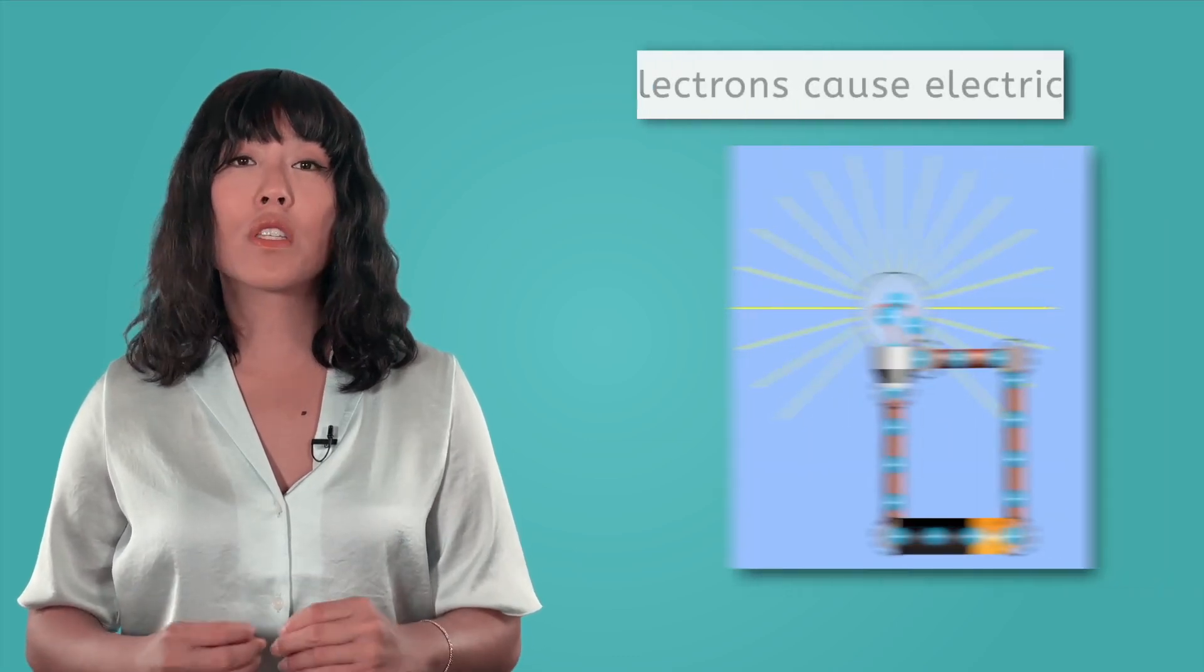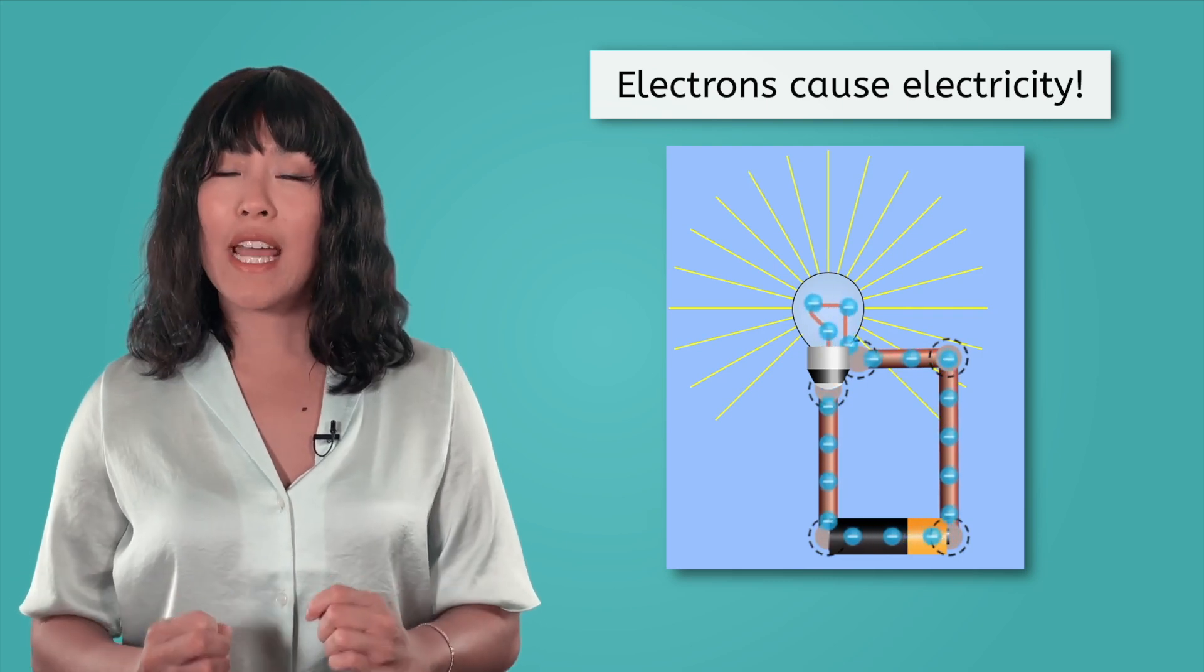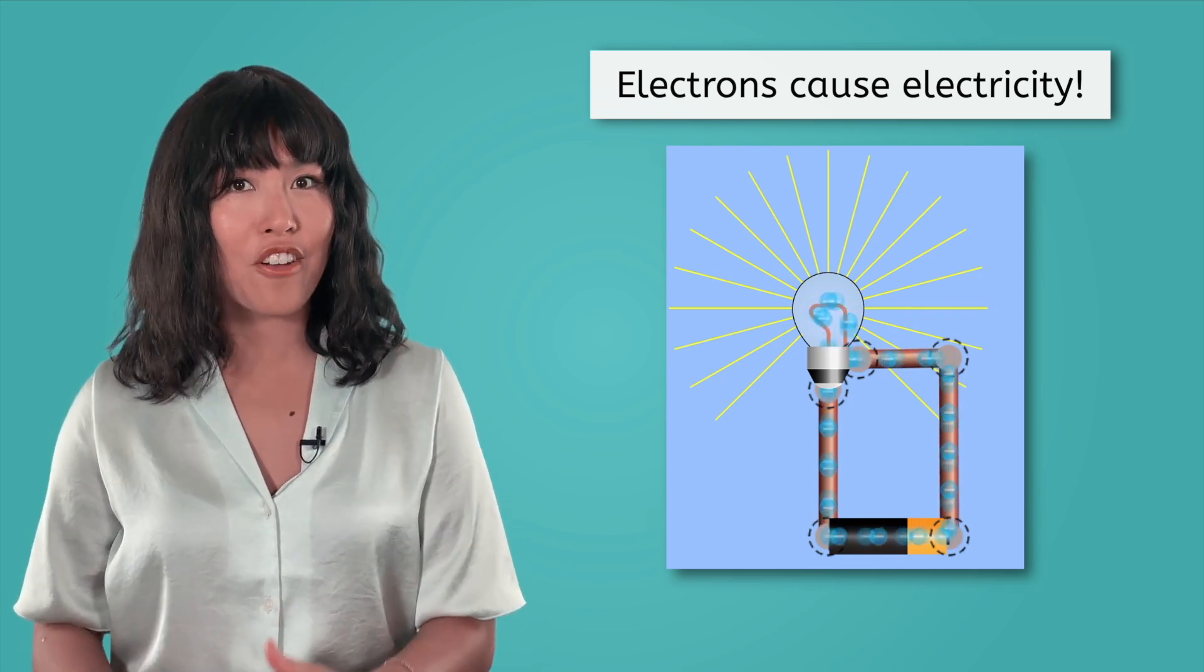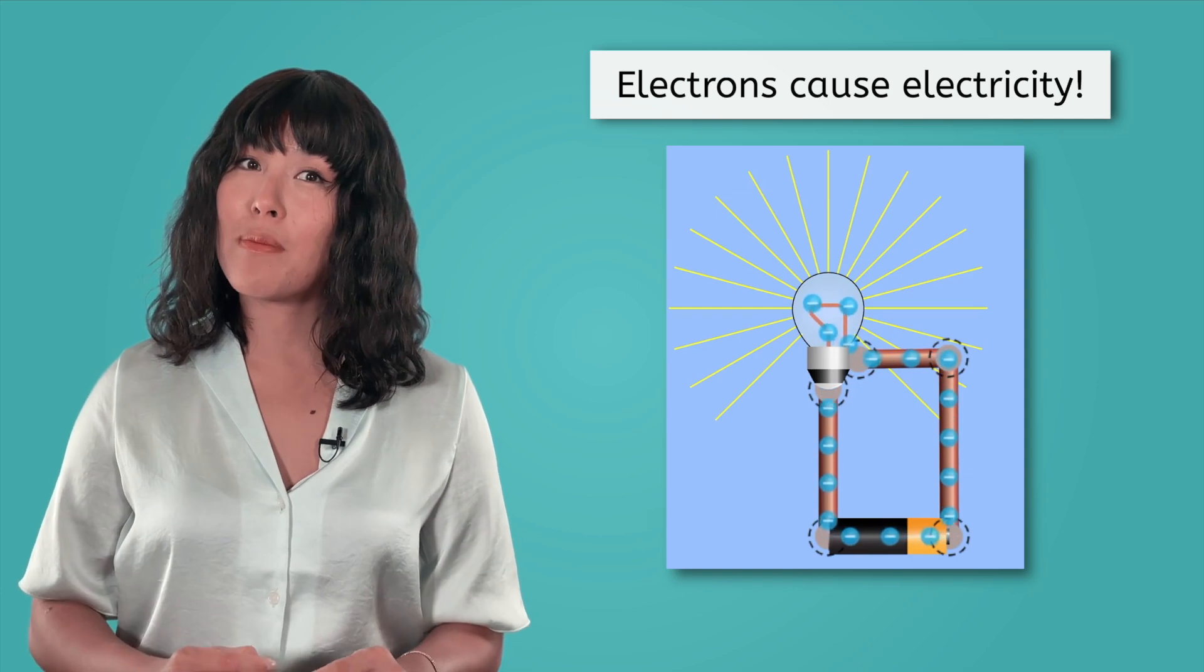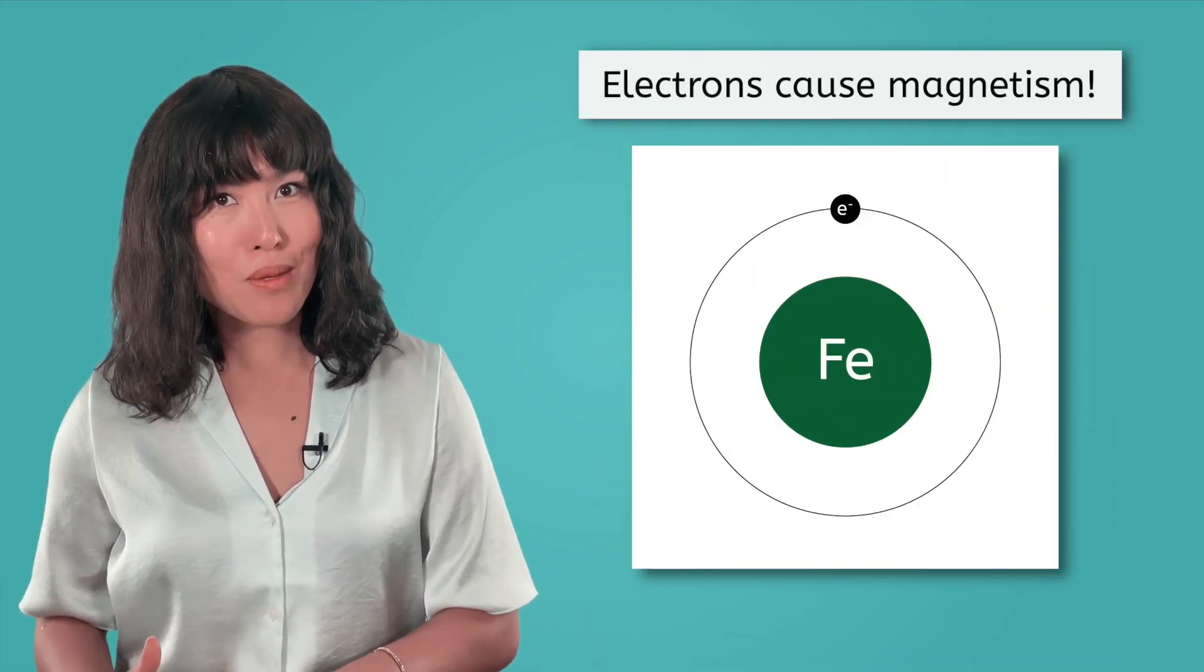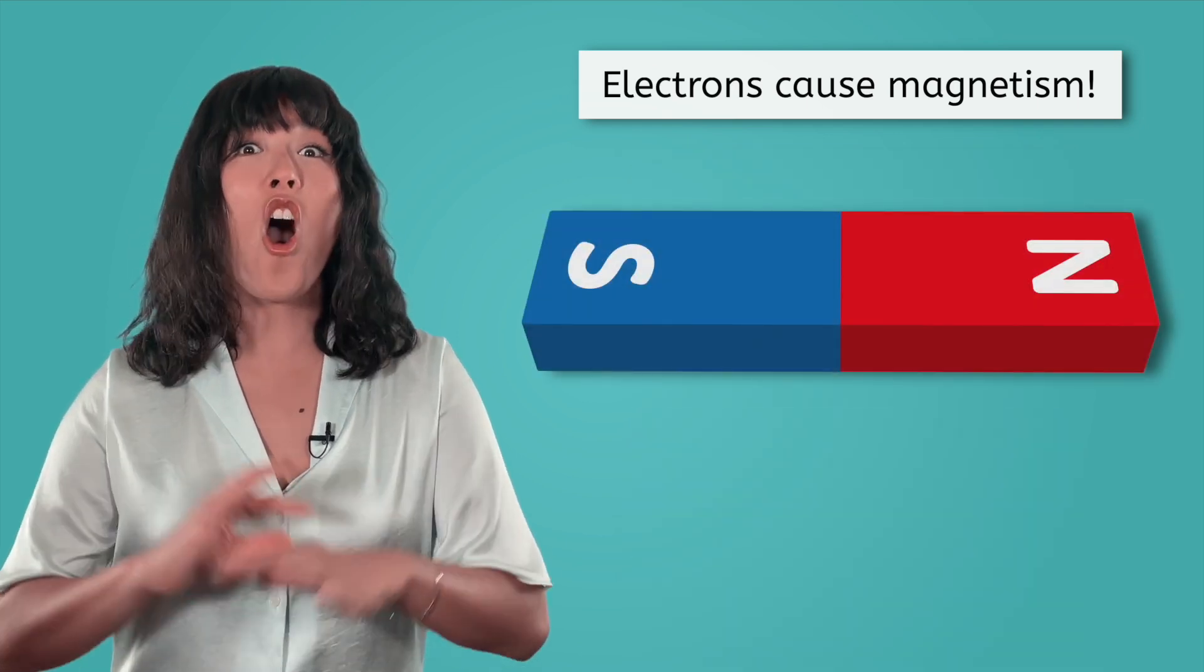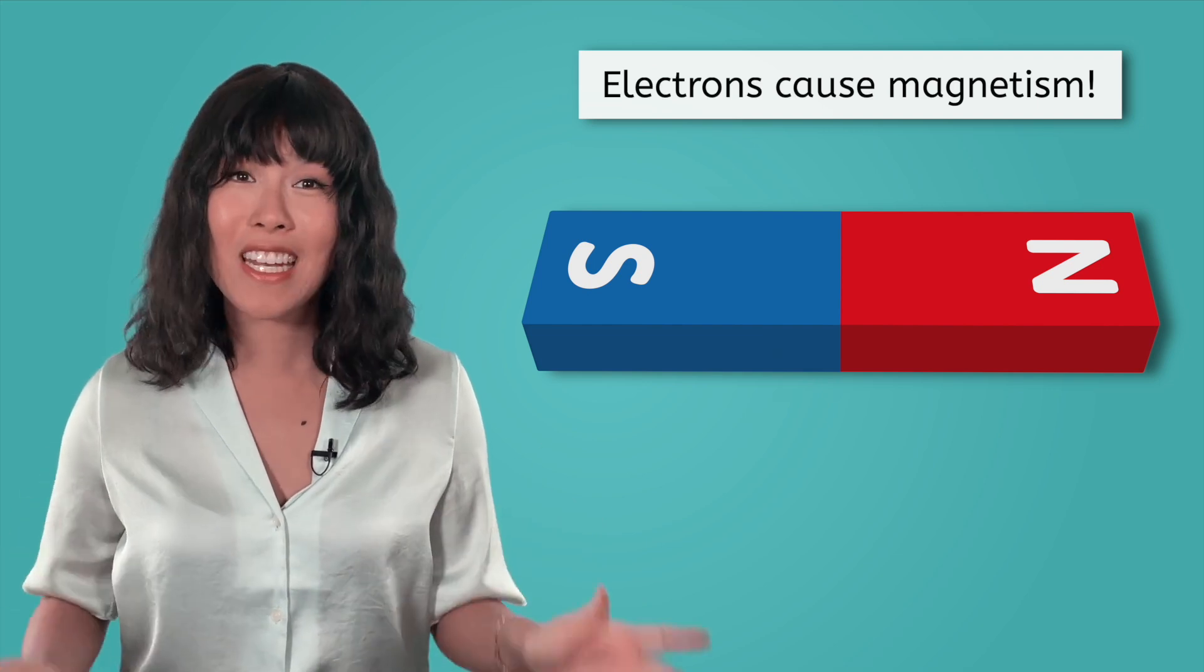We know from previous lessons that the electrons are responsible for electricity. When they flow, the moving charges create a current that produces energy. So it will probably come as no surprise that the electrons are responsible for magnetism as well. The electrons seem to have all of the interesting jobs in an atom.